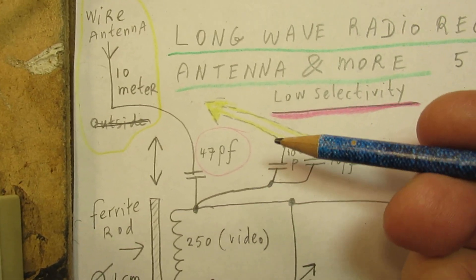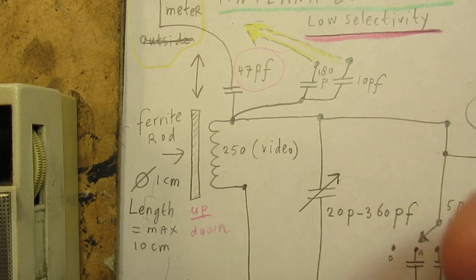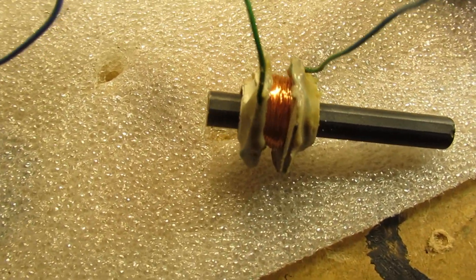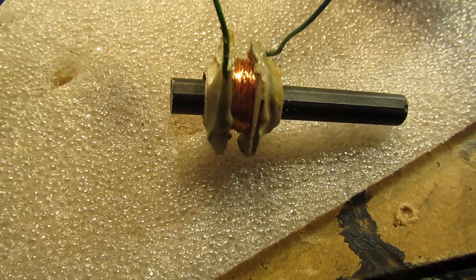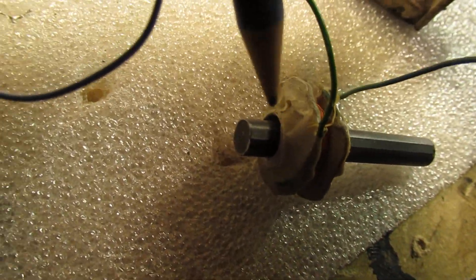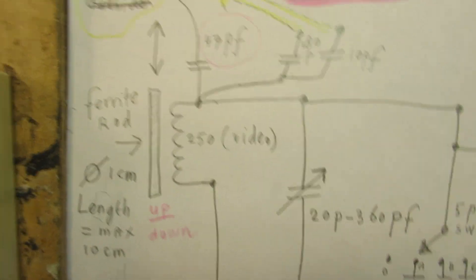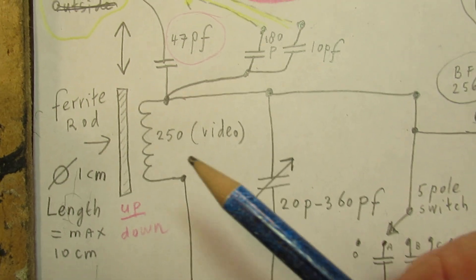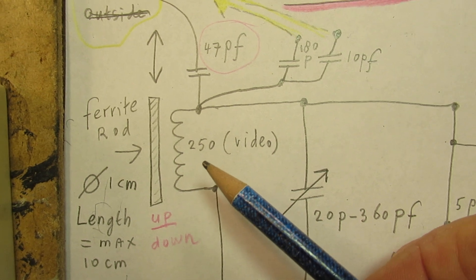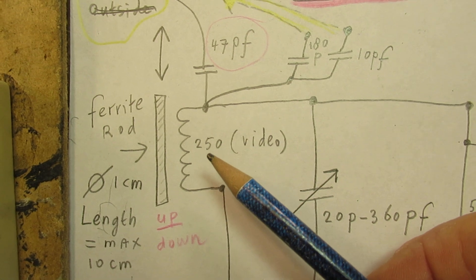Now it is 47 picofarad and you can move the ferrite rod in and out. Here is the long wave coil. The big problem is that I did not indicate the amount of windings here, but more or less for sure it is 250 windings of very thin insulated lacquered copper wire.